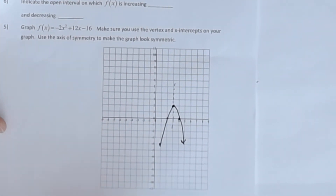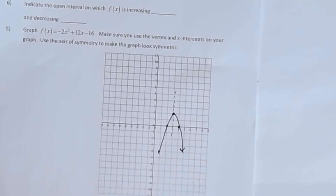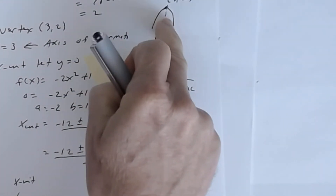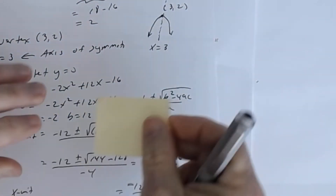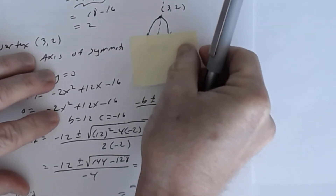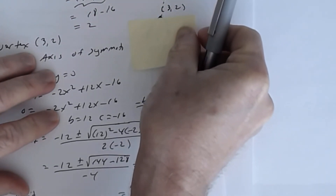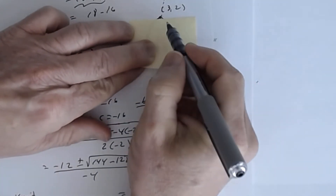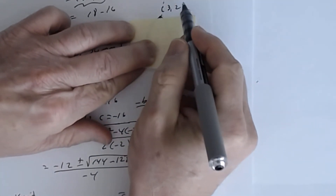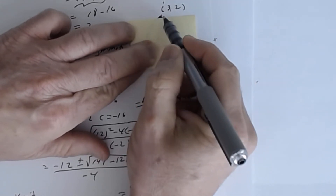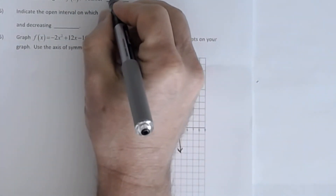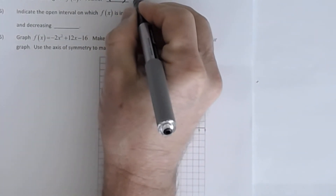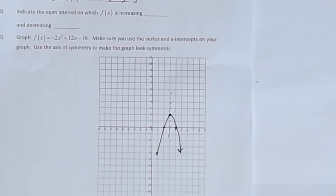Now let's talk about the range. The range is the set of y-coordinates. Going from bottom up, we go from negative infinity all the way up to the highest point, which is the maximum. That y-value is 2, so the range is (-∞, 2].